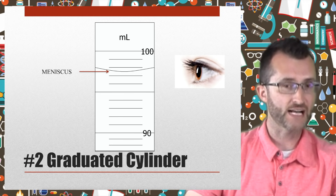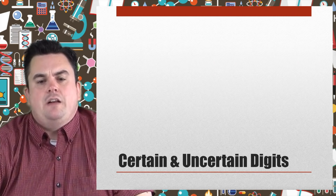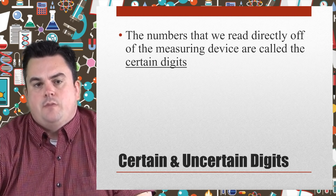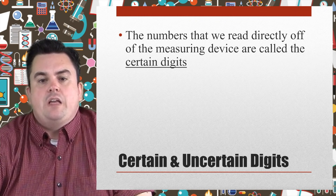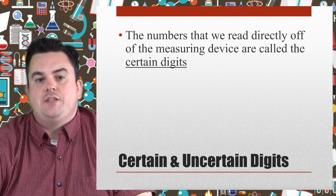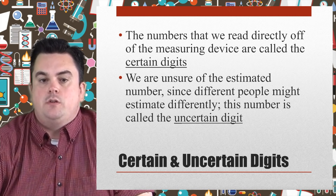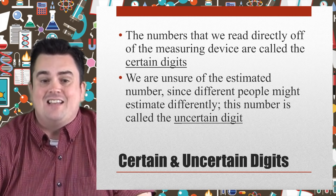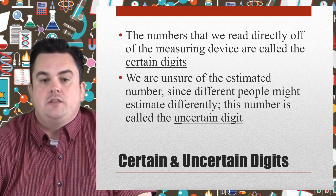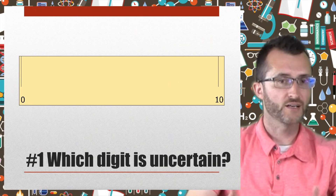Certain and uncertain digits. The numbers we read directly off the measuring device are called the certain digits. We are unsure of the estimated numbers since different people might estimate differently — this number is called the uncertain digit. It's okay to have a different estimated digit than the people around you.